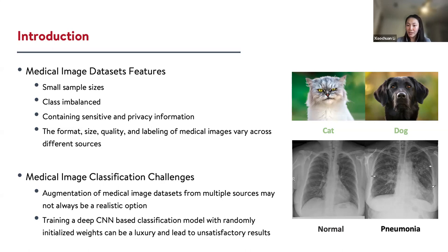For natural images, if we have two datasets of dog images, we can easily combine them and have a bigger dataset. But that will not always be the case with medical image datasets. As the sample size is small, training a deep convolutional neural network classification model with randomly initialized weights can be a luxury and lead to unsatisfactory results. The goal of our research is to overcome these challenges and propose a privacy-preserving and communication-efficient information enhancement procedure for medical image classification.